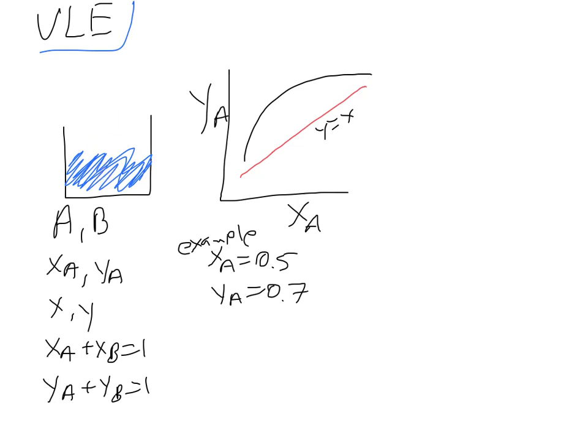And we can make a similar plot for the relationship between XB and YB, or the mole fractions of species B, but we don't need to because we have these equations right here. So once we know YA and XA, we can just use these two equations right here to find out what YA or YB and XB are. So we have a way to figure out the relationship between XA, XB, YA, and YB using these equations in this relationship right here, the XY plot.